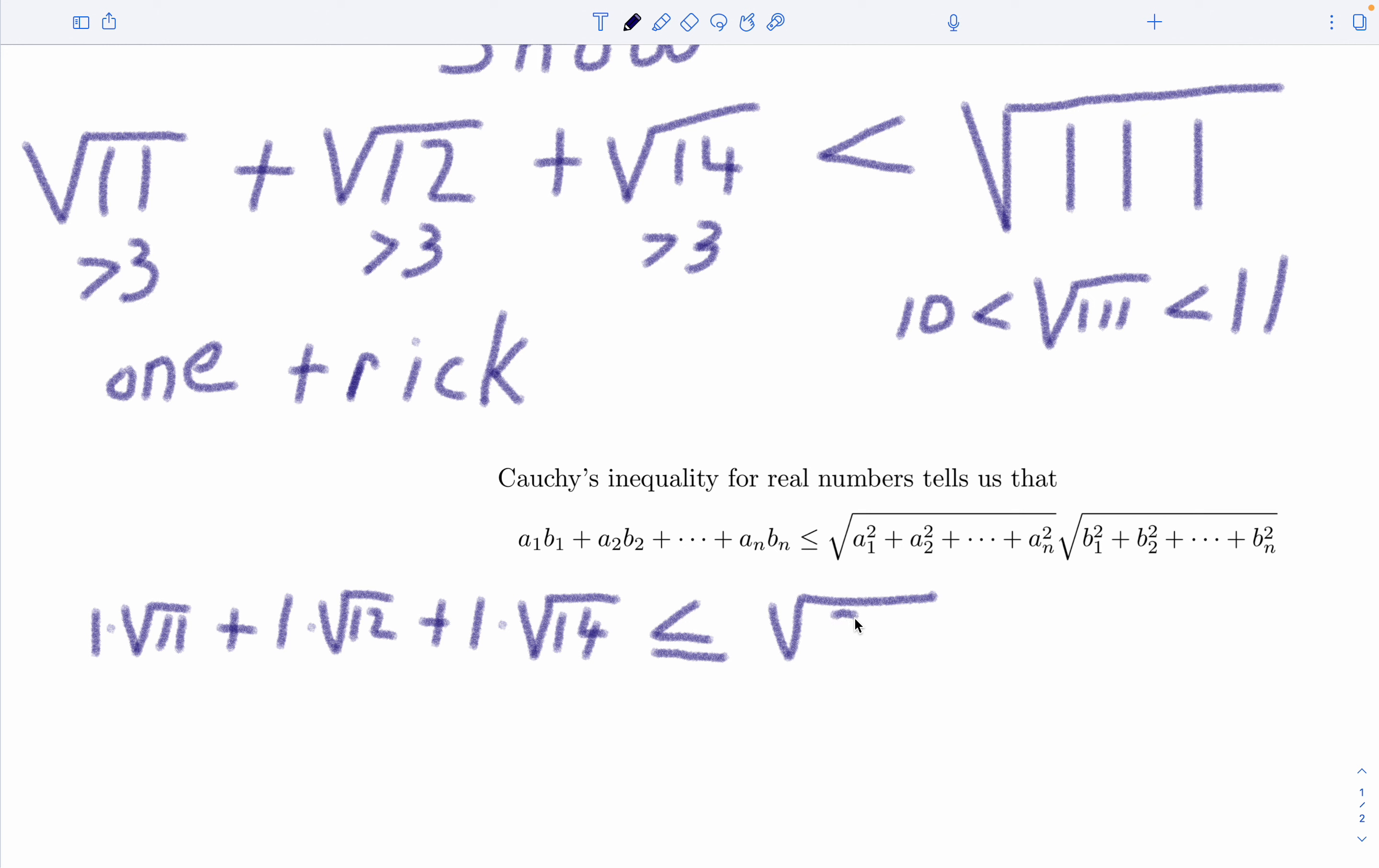And this Cauchy-Schwarz inequality is pretty neat. It relates a dot product in vector notation to the product of the magnitudes of the vectors. And notice it relates addition to multiplication, more or less. Now this next piece, the b sub 1's were square root objects, so you have to square the square roots. And so you get the sum of 11, 12, and 14.